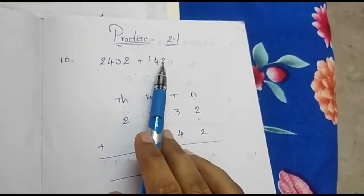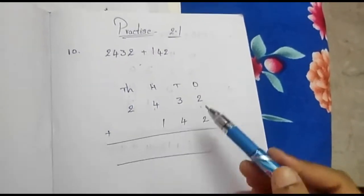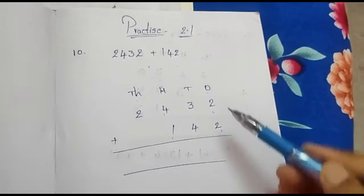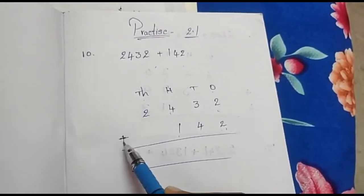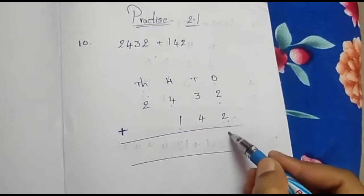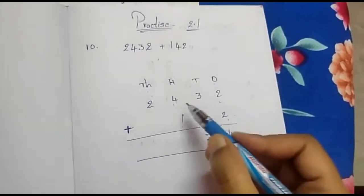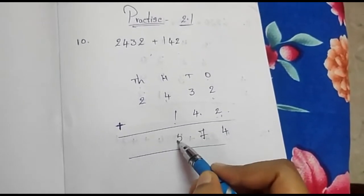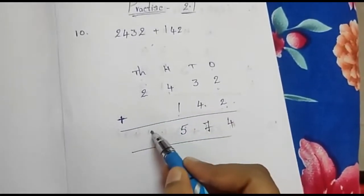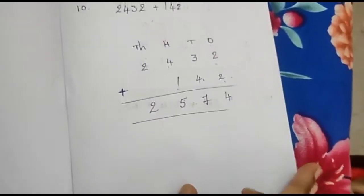But the second number, 142, has only 3 digits — ones, tens, hundreds. So you write it accordingly starting from the ones place: 142. Now add these 2 using the plus symbol. Start with the ones place: 2 plus 2 is 4. Then 3 plus 7 is 10 — count 3 after 4, 5, 6, 7. Then 4 plus 1 is 5. In the thousands place there is no number given, so consider it as 0: 2 plus 0 is 2. In this way you solve the addition.